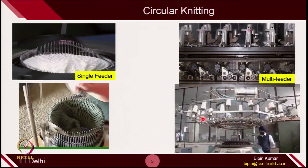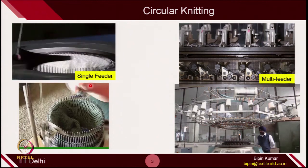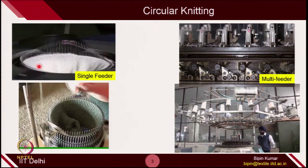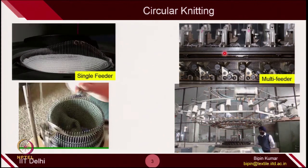In circular knitting, you may have seen both single feeder and multi-feeder machines. In a single feeder machine, there is just one feeder, and in one rotation only one course is formed. To increase production, we can use multi-feeder machines, where multiple feeders are placed along the circumference. In one rotation, each needle makes multiple knitting actions — n courses can be formed, where n is the number of feeders, which equals the number of cams.